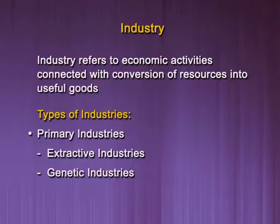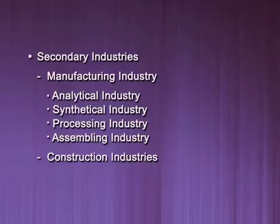The second type of primary industry is genetic industry. Genetic industry is connected with breeding of plants and animals for further reproduction, like poultry farming. The second type of industry is secondary industry. All materials extracted by the primary industry are used by the secondary industry for further improvement to make finished products.